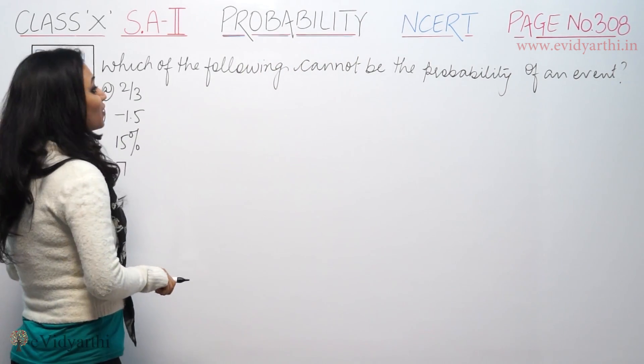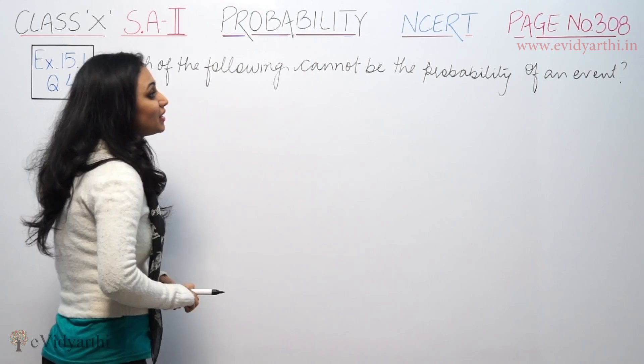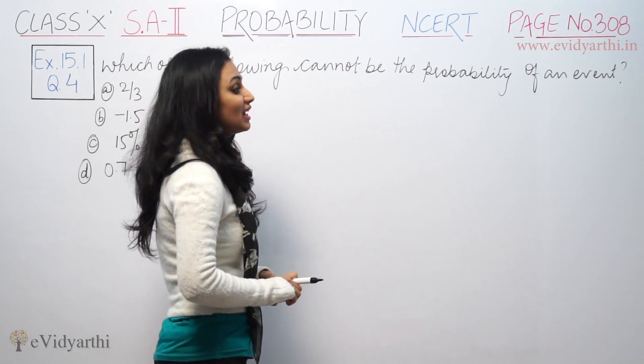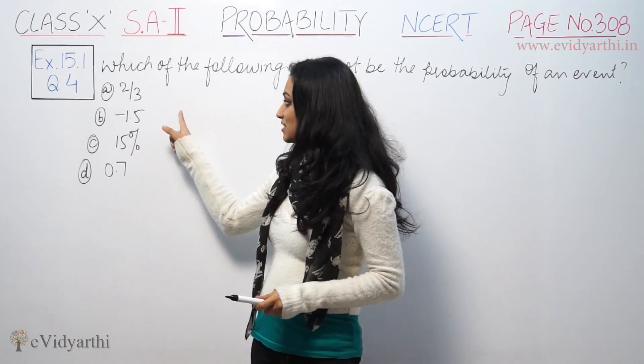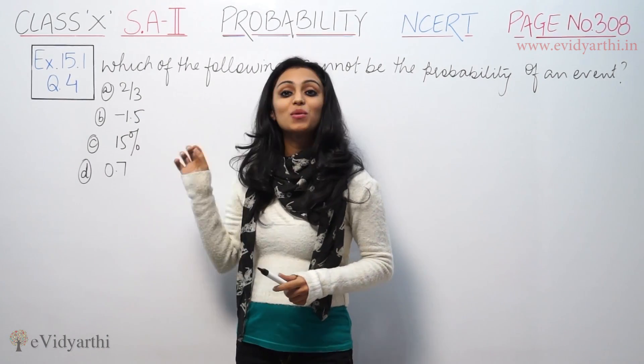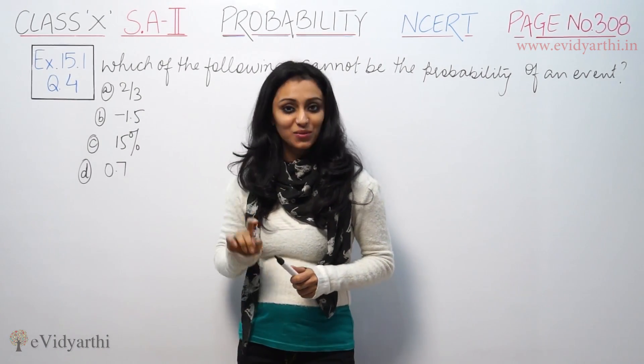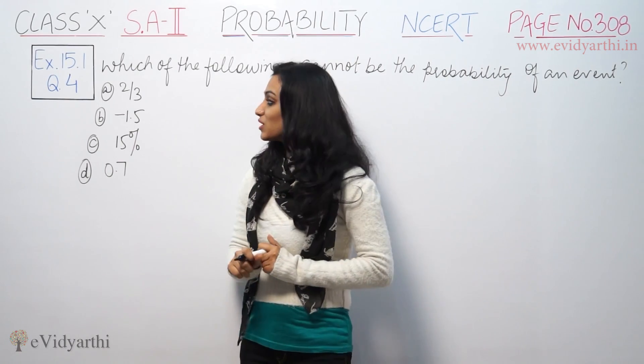This says: which of the following cannot be the probability of an event?